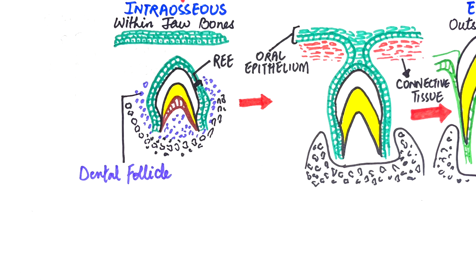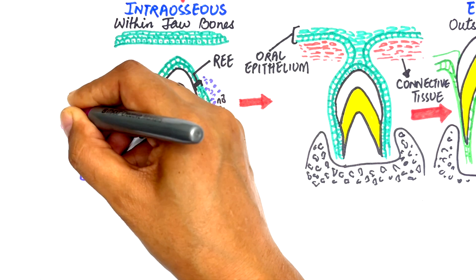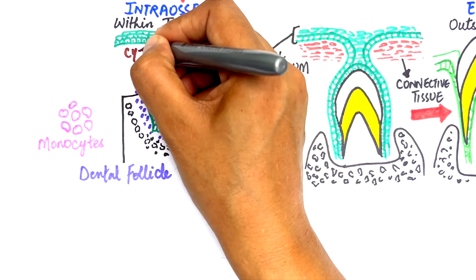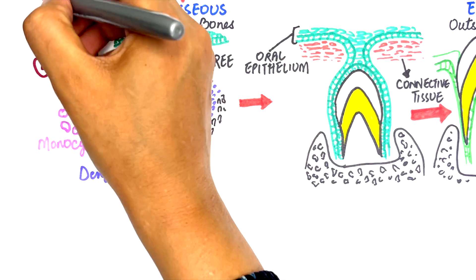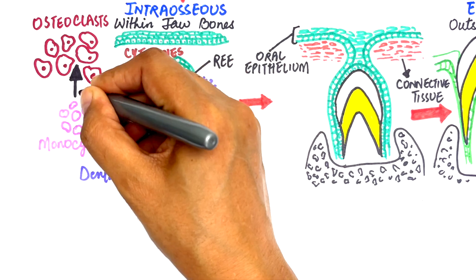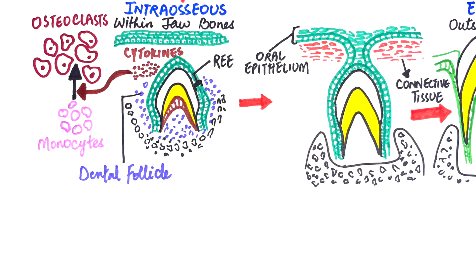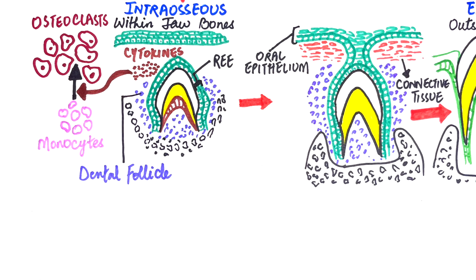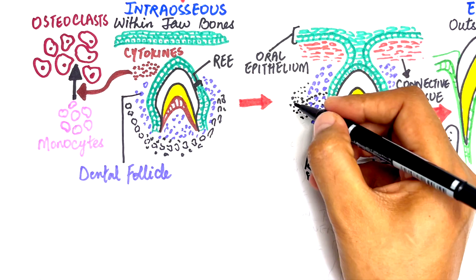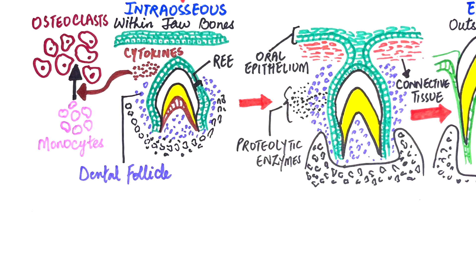The circulating monocytes are recruited into the area of bone resorption. Cells of the enamel organ produce cytokines that stimulate the conversion of monocytes into osteoclasts. As the bone is resorbed from the top of the tooth, the dental follicle comes in contact with the connective tissue of the overlying mucosa, which causes the reduced enamel epithelium to secrete proteolytic enzymes that assist in the breakdown of connective tissue and establish a pathway for tooth eruption. Since the overlying connective tissue is lost in this process, hence no bleeding can be observed.